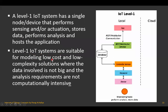Level one IoT systems are suitable for modeling low-cost and low-complexity solutions. Whenever you wish to implement a low-cost or low-complexity IoT application, you may use a level one IoT system. It is used when the data involved is not big and the analysis requirements are not computationally intensive — that is, when there is no big data and not much computation required.